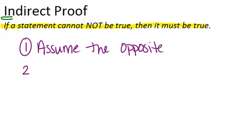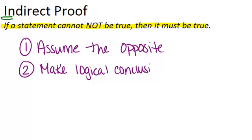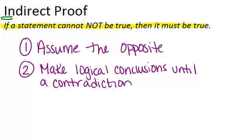And then what you're going to do is make logical conclusions just like you would in a normal proof so keep going with different steps until you reach a contradiction. And a contradiction is when you reach a place where it doesn't make sense anymore. A contradiction is two things that couldn't possibly happen at the same time.